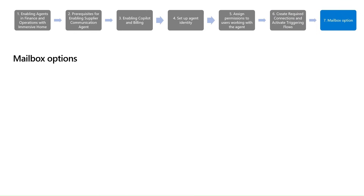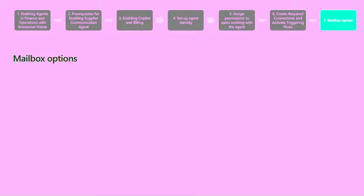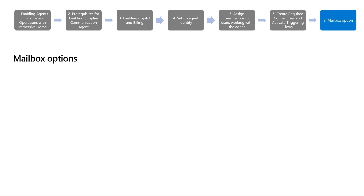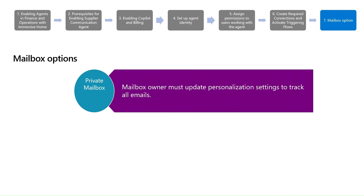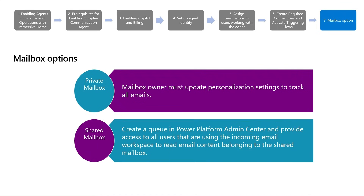To enable email analysis and delivery features of the supplier communication agent, you must set up the targeted mailbox to be synchronized with Microsoft Dataverse at the server level. This can be performed with either a private or shared mailbox. For a private mailbox, the mailbox owner must update personalization settings to track all emails. For a shared mailbox, create a queue in the Power Platform Admin Center and provide access to all users using the incoming email workspace to read email content belonging to the shared mailbox.